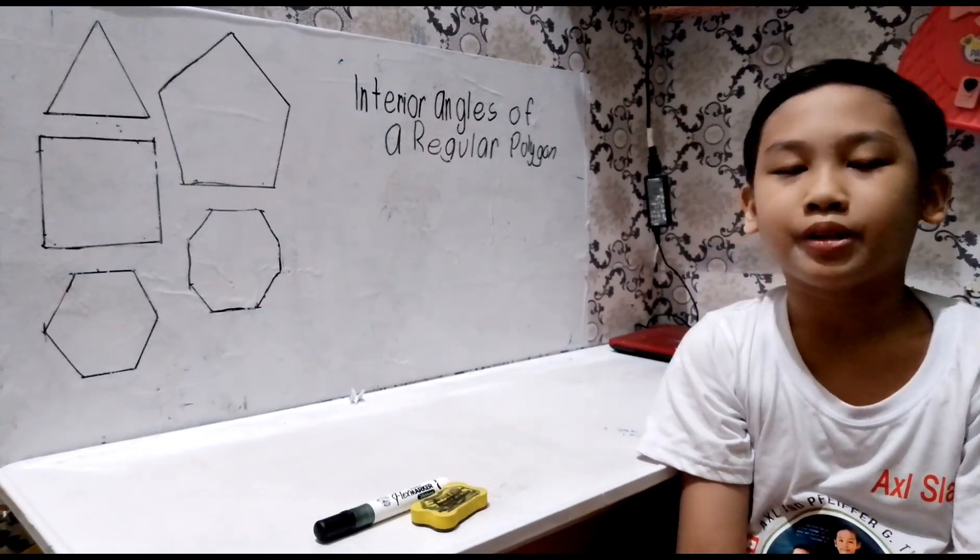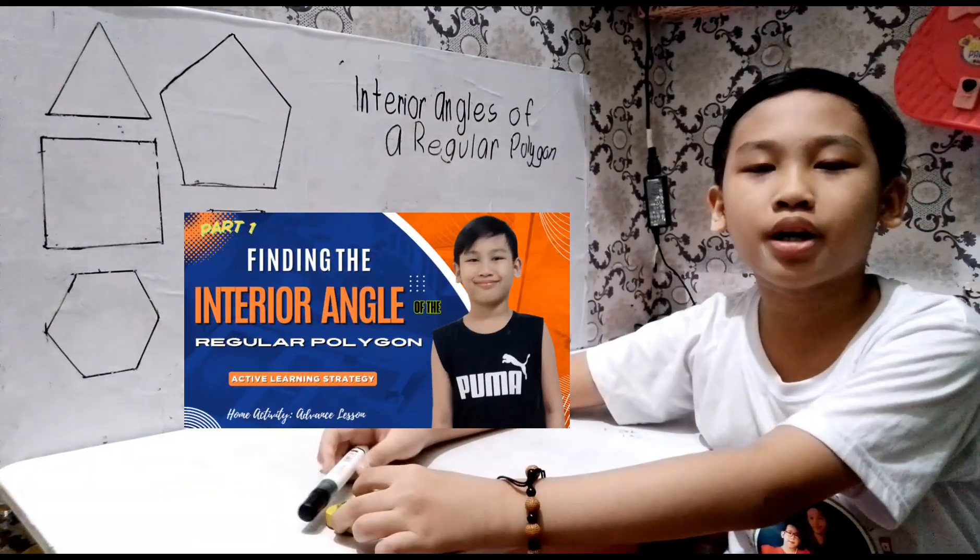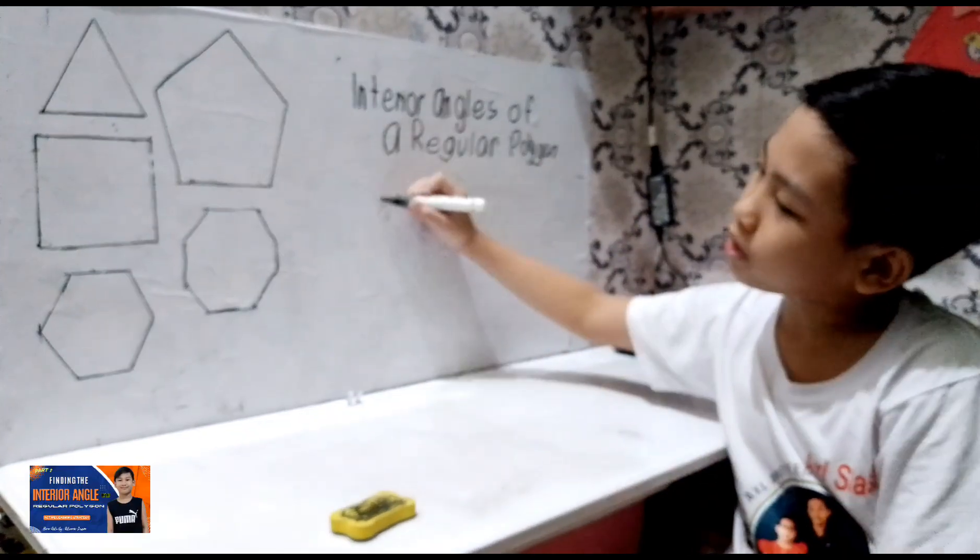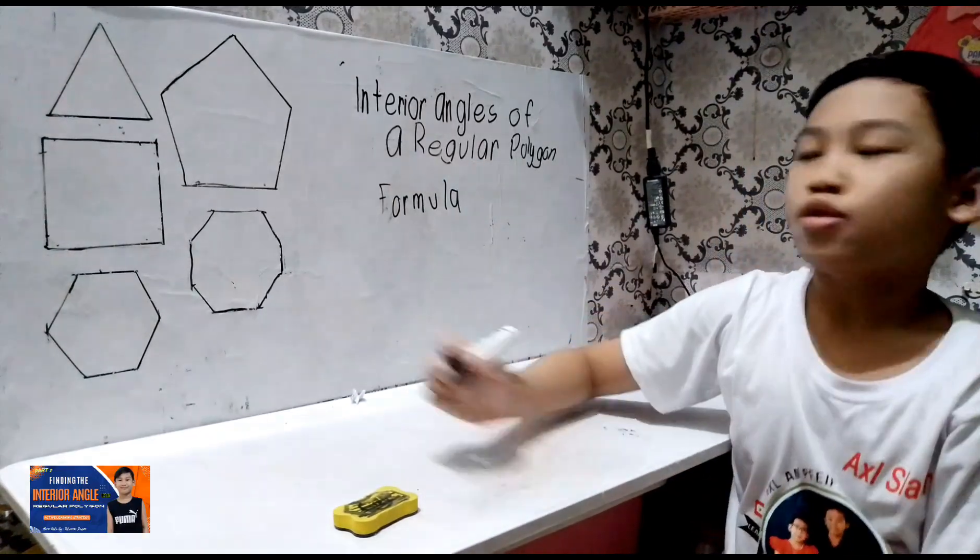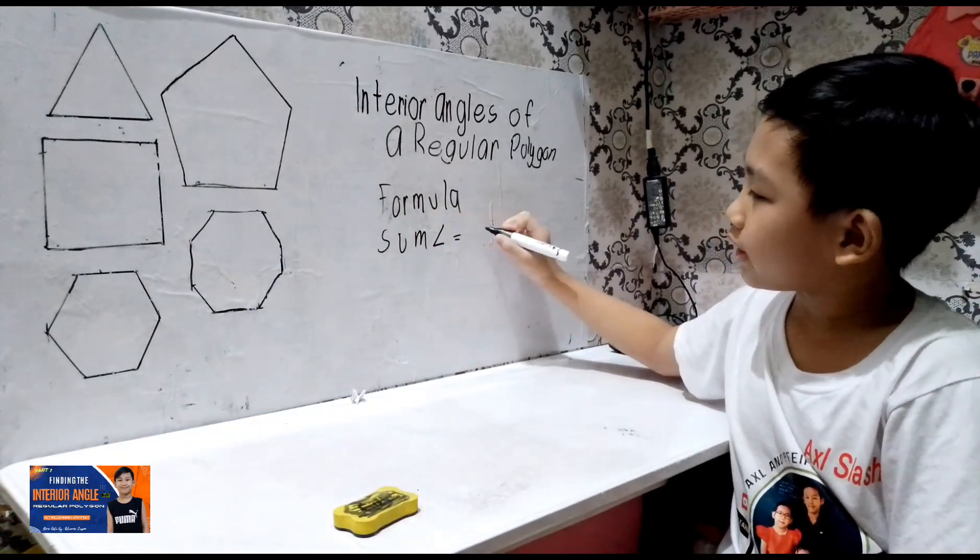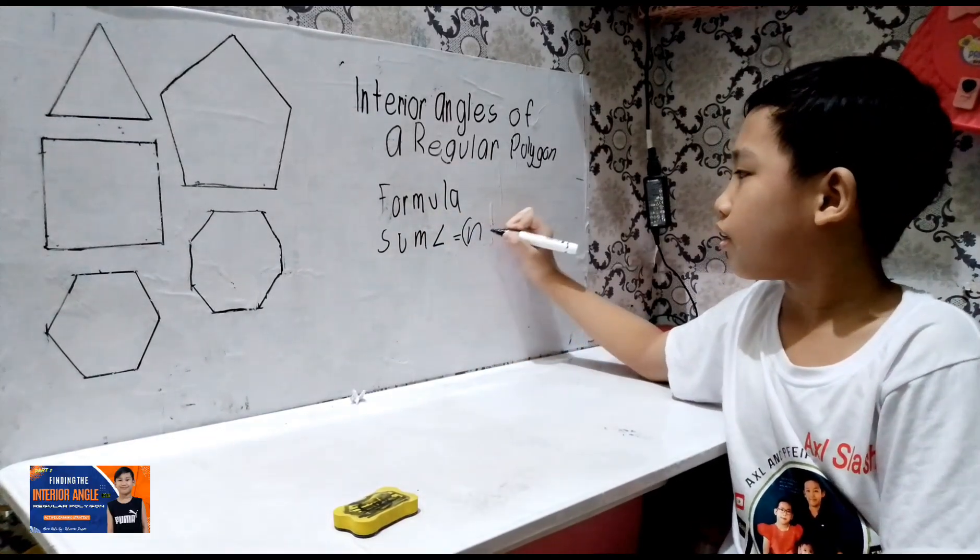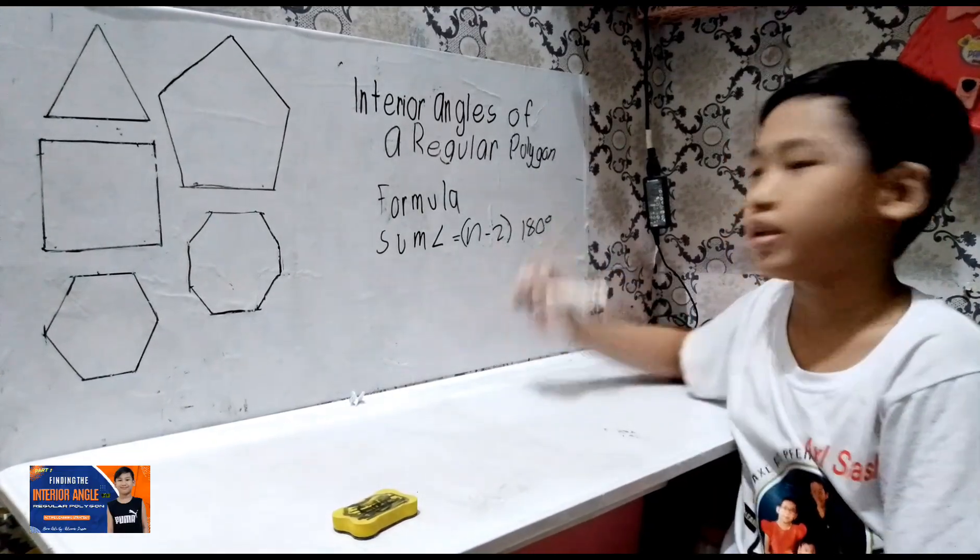For our home activity, it's about interior angles of a regular polygon. Let's remember these formulas. To find the sum of interior angles, let's use N minus 2 multiplied by 180 degrees.